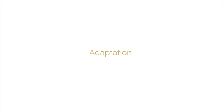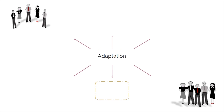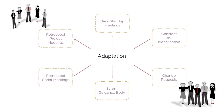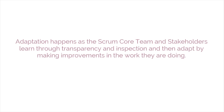The third main characteristic of Empirical Process Control is adaptation. Adaptation happens as the Scrum core team and stakeholders learn through transparency and inspection and then adapt by making improvements in the work they're doing.